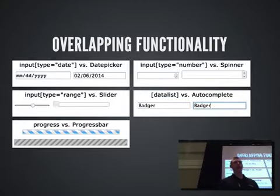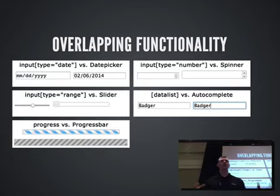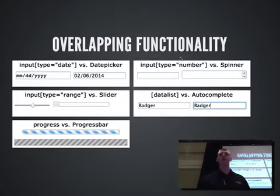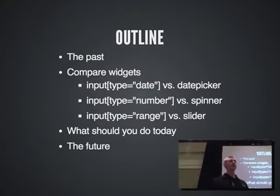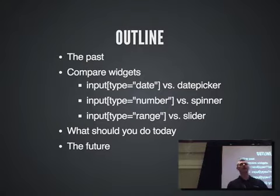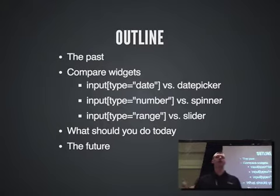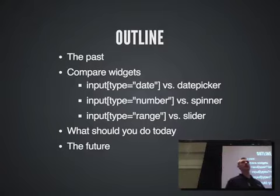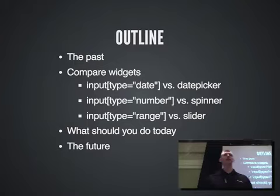For years we complained about these things not being available on the web, and now that we have them, we have this situation where as developers we have to choose: do we use the native controls or the JavaScript widgets we've been using for years? I'm going to briefly summarize how we got to this point, look at specific instances comparing native versus jQuery UI controls, answer what you should actually use today, and then take a look at what's being done at the spec level for the future.